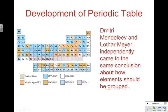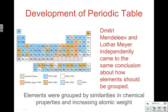There were actually two scientists working independently at the same time who basically came to the same conclusion. They were trying to come up with a better, more useful way to list the elements in a table, and they came up with the same fundamental idea: elements were grouped by similar properties and increasing atomic weight.